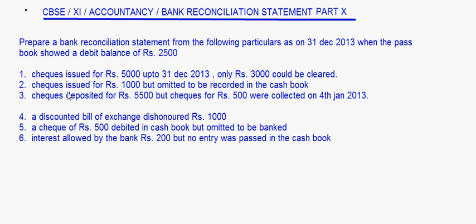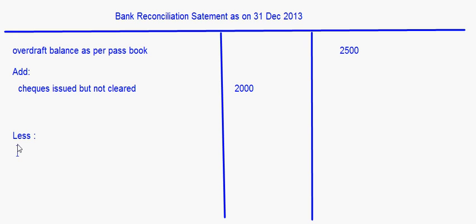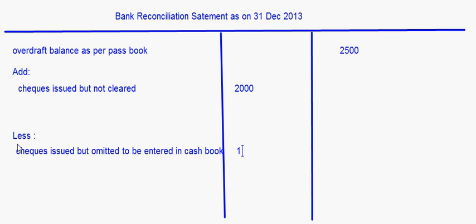The next one is checks issued for Rs. 1,000 but omitted to be recorded in the cashbook. The checks have been issued for Rs. 1,000, so it may have been cleared by the bank. The overdraft as per the passbook goes up but in the cashbook you have not recorded it, so the cashbook overdraft balance is less. So here it will come in the less column: checks issued but omitted to be entered in cashbook, Rs. 1,000.